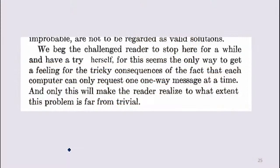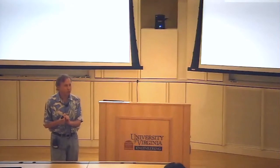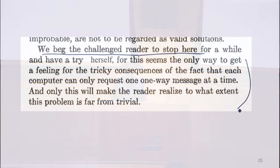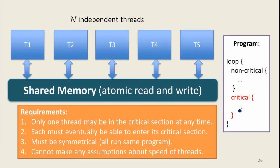So this is the problem, and at this point Dijkstra's one-page paper says we should beg the challenge reader to stop here and try this yourself, because it sounds kind of trivial until you actually think about it. It seems about as simple as you could pose this mutual exclusion property, and the fact that they have shared storage seems like it should be easy. So when Dijkstra begs you to do something — even if he's dead — we should still do it. You're going to have a chance to think about this before we talk about a solution. Don't look at the back of your sheet, but work with people nearby you in groups of two or three to see if you can solve Dijkstra's problem.